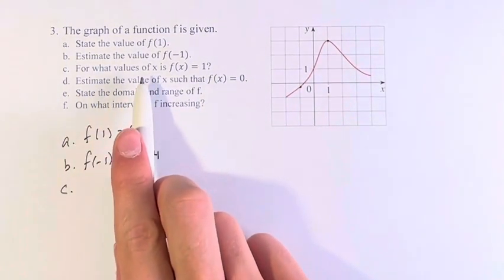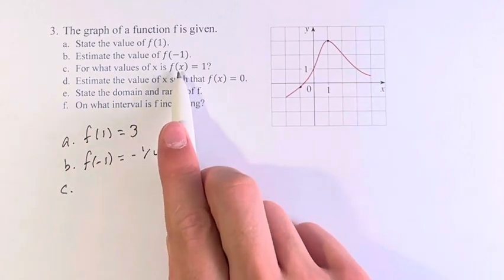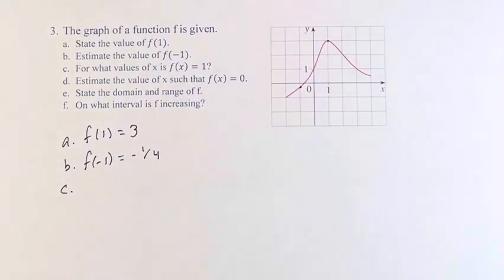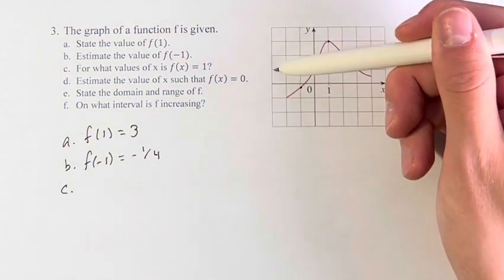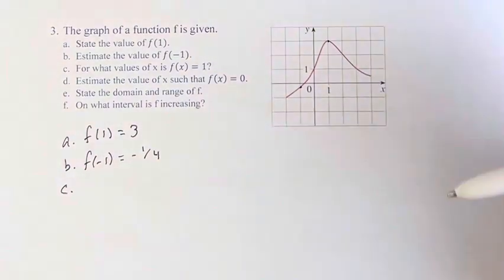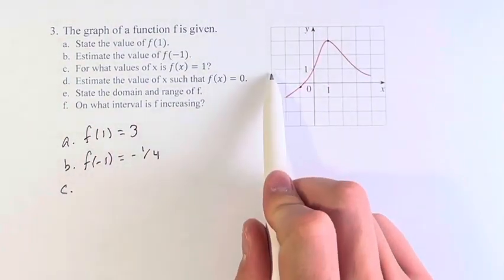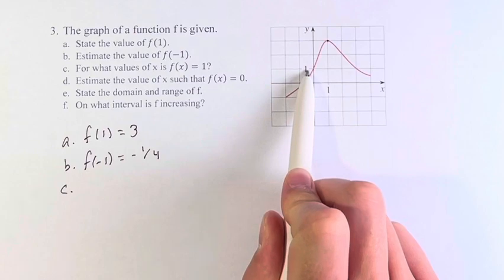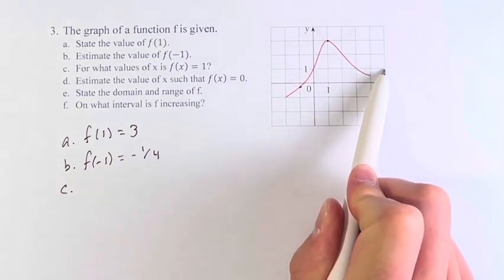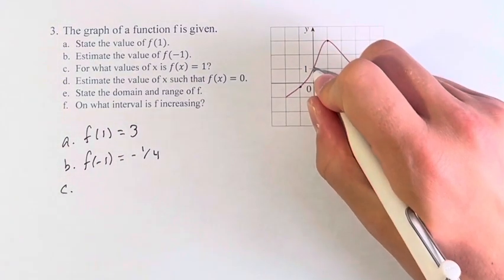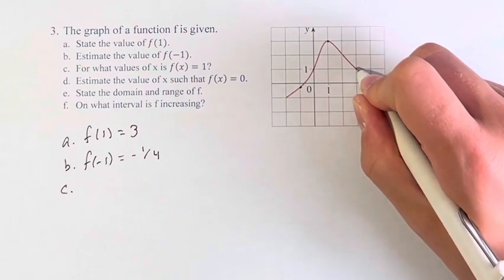Next, we're asked for what values of x is f(x) equal to 1. So for what y value of 1 do we see this function? If we go at y equals 1, we see this line. We intersect at this point here and this point here.